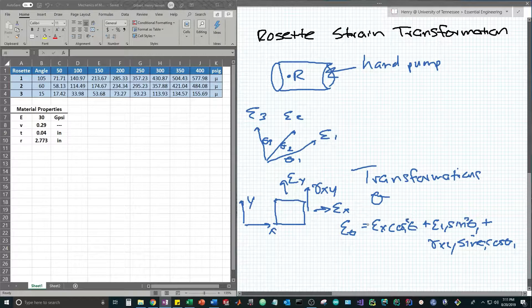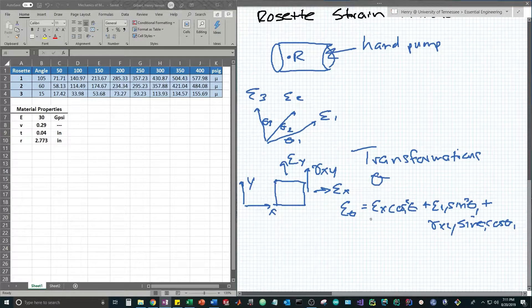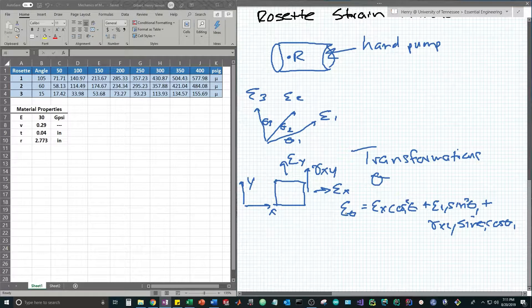In our scenario we have three strain gauges and three angles, so this is actually going to become a system of equations involving three states of plane strain. The fun thing about this problem is we actually start by knowing the values of plane strain but we need to work backwards to get the normal strain values.